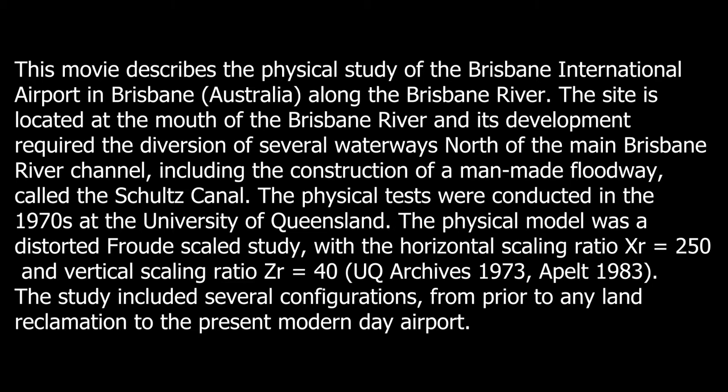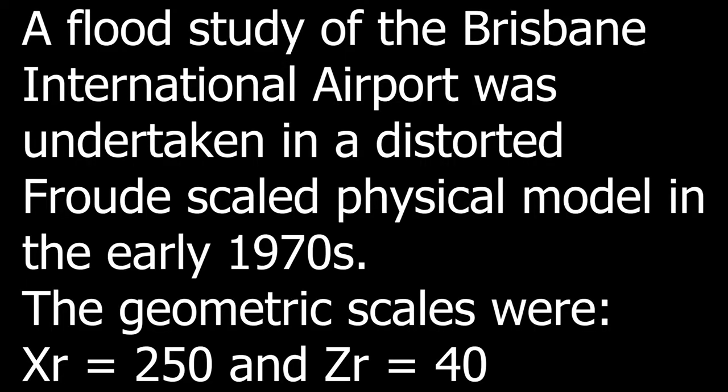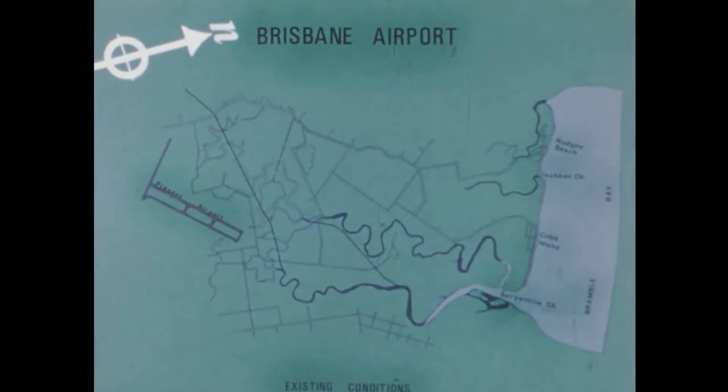The physical model was a distorted Froude scale study with a horizontal scaling ratio XR equals 250 and a vertical scaling ratio ZR equals 40. The study included several configurations, from prior to any land reclamation to the present modern-day airport configuration. The film shows the present airport and proposed development area.